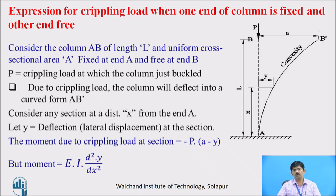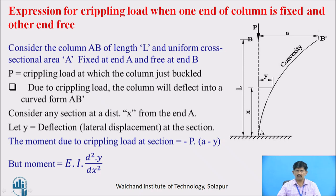The expression for crippling load when one end of the column is fixed and other end is free. We will consider a column AB having length L and cross-sectional area A, which is fixed at end A and free at end B. P is the crippling load applied. After applying the crippling load, the column will deflect into shape AB', and we consider a section at a distance X from A where the deflection of the column is Y.